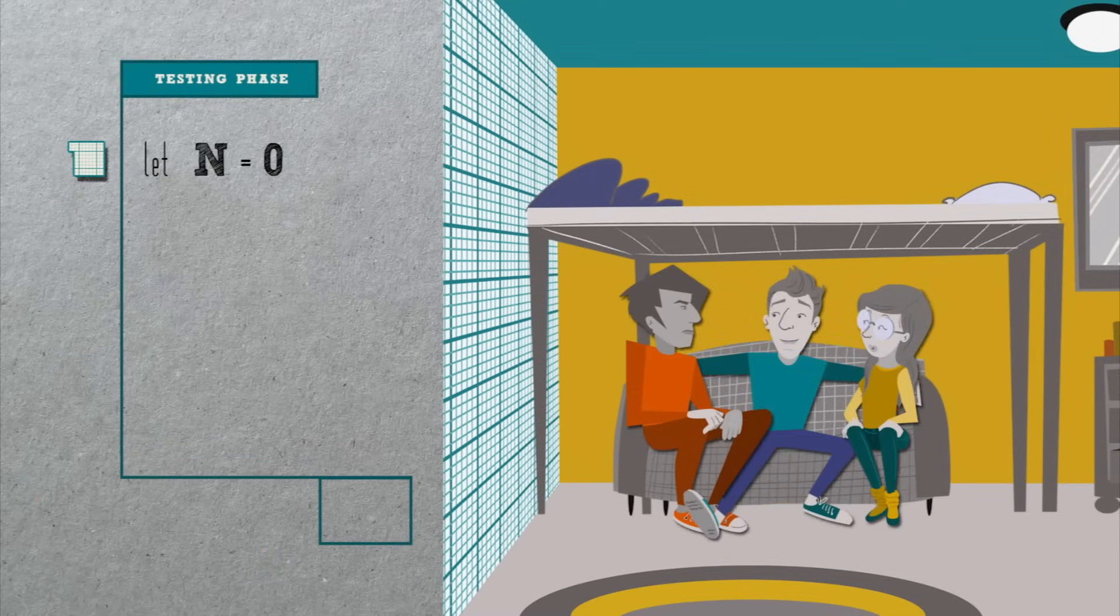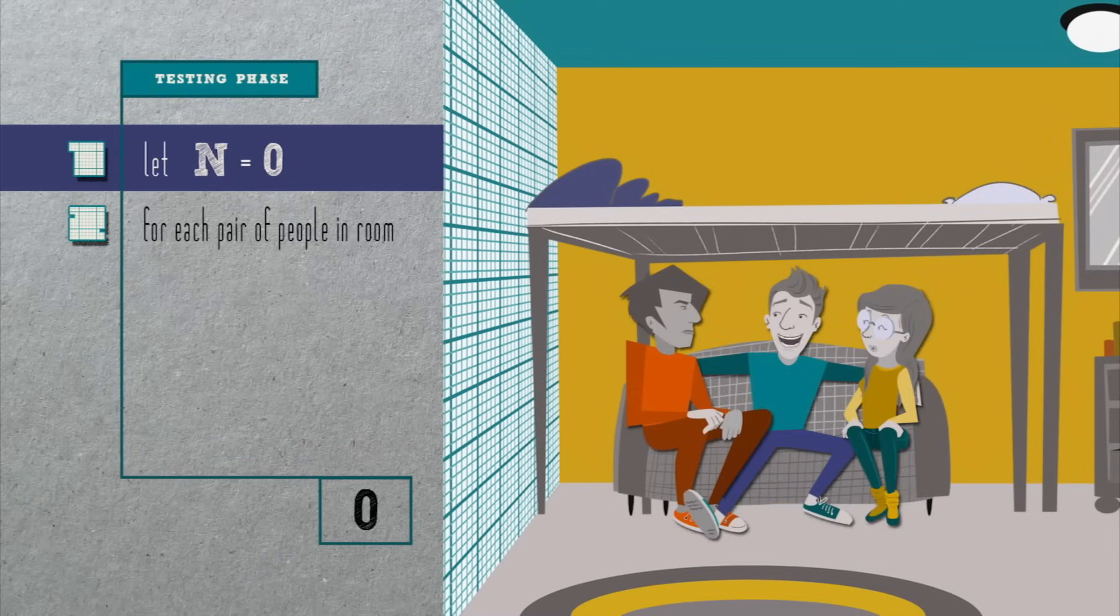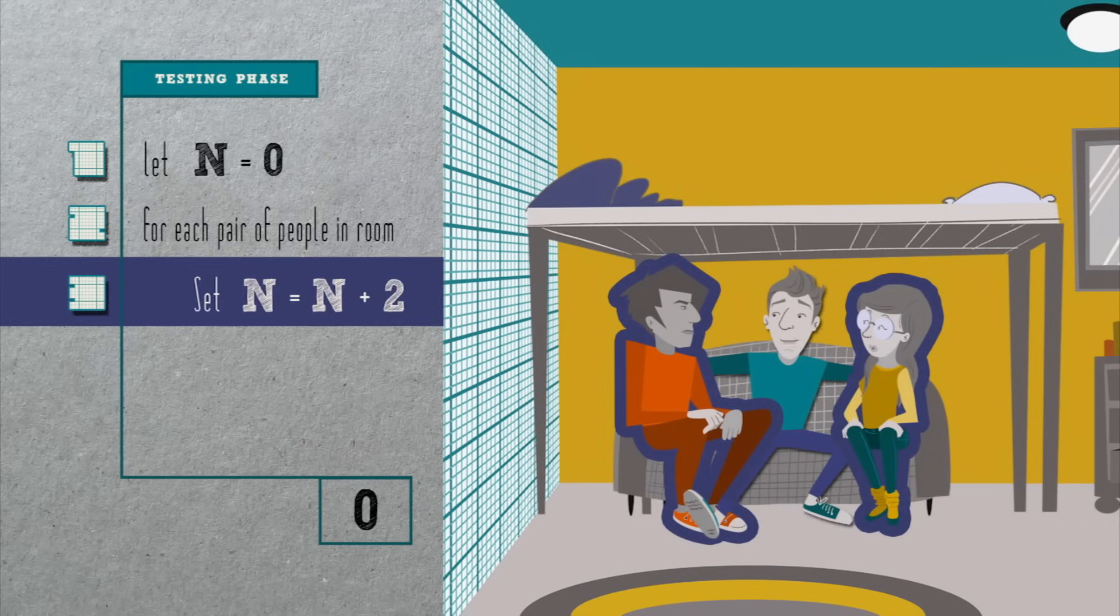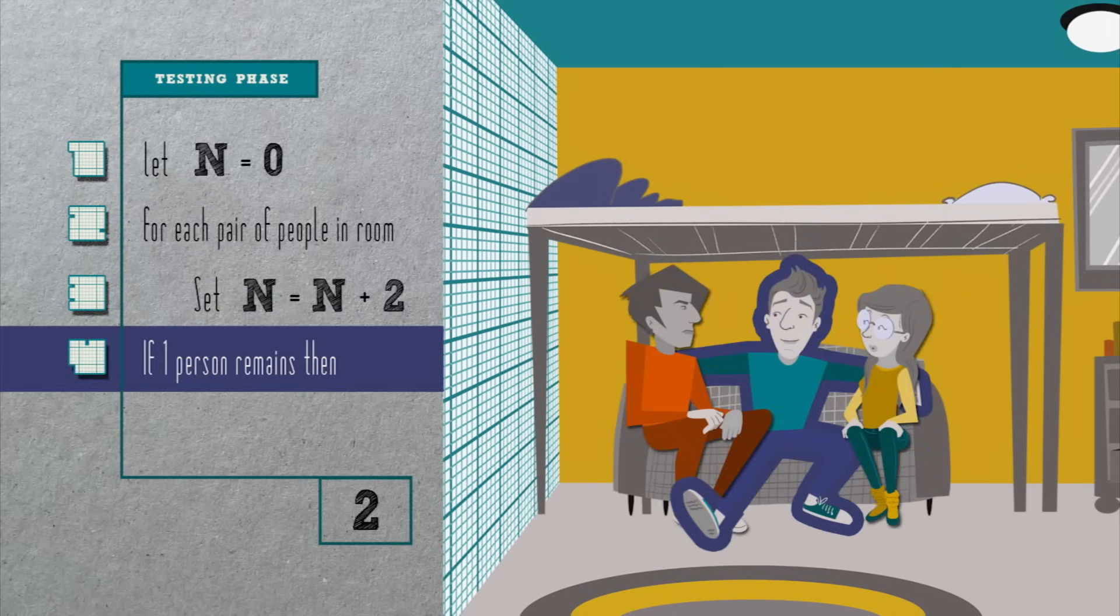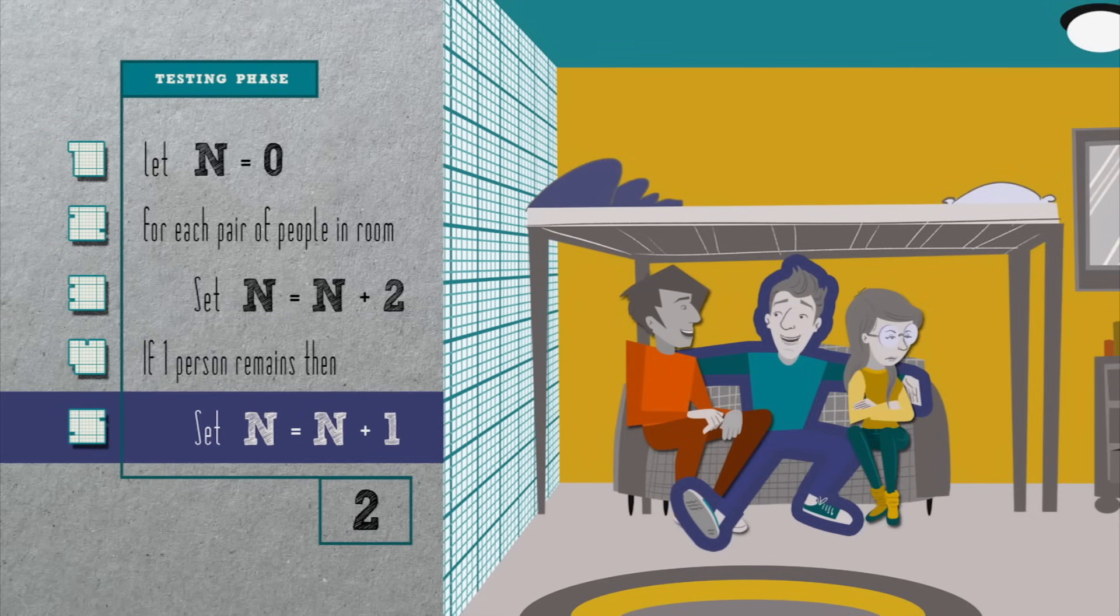Let's redress with some new pseudocode. Let n equals zero. For each pair of people in room, set n equal to n plus two. If one person remains unpaired, set n equal to n plus one.